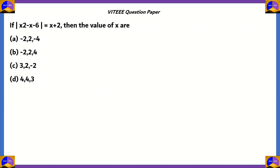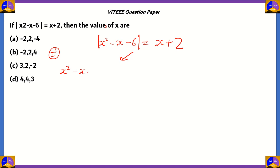Now for the final question: if |x²−x−6| = x+2, find the values of x. We have two cases. Case 1 is when x²−x−6 is negative, so x²−x−6 = −(x+2), which gives x²−x−6 = −x−2.